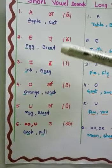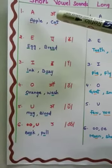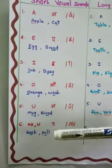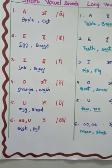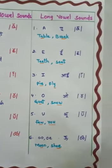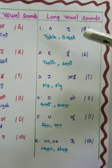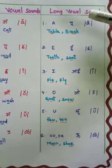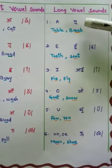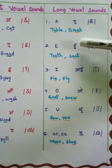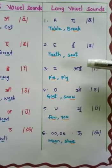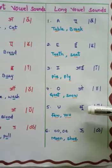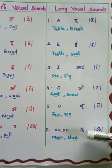So these are the short vowel sounds: A, E, I, O, U. Now let us see long vowel sounds. Long vowel sounds here are A, E, I, O, U, and U. The sounds will be somewhat long.